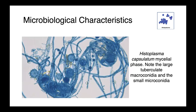Histoplasma capsulatum is, in my opinion, the most photogenic of the dimorphic fungi. Here you can see again the mycelial phase with abundant fungal hyphae, and then the two different types of spores: the large tuberculate macroconidia that almost look like flowers or sunbursts, and then the smaller microconidia.